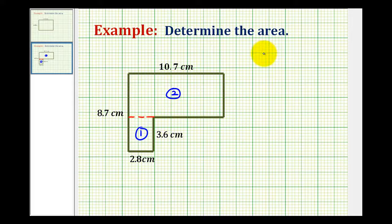The area formula for a rectangle is area equals length times width. So for this small area, we'll call it area sub one, we need to determine the product of 2.8 centimeters and 3.6 centimeters.